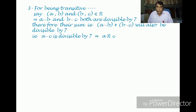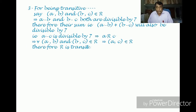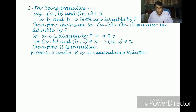Finally, we have a minus c is divisible by 7, that is a is related to c. So in the case where a is related to b and b is related to c, we have a is related to c. For every ordered pair (a, b) and ordered pair (b, c) belonging to R, it implies ordered pair (a, c) belongs to R. So the given relation is transitive. Since the relation has all three properties — it is reflexive, symmetric, and transitive — therefore it is an equivalence relation.